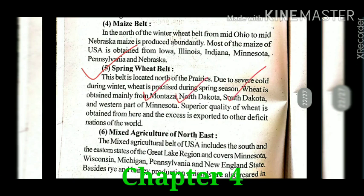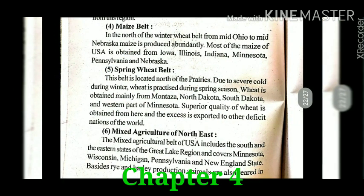The next belt is the mixed agriculture of the northeast. This belt includes the south and eastern states of the Great Lake region and it covers mainly Minnesota, Wisconsin, Michigan, Pennsylvania, and the New England states. Rye and barley production occurs here, and there is also animal rearing with a history of dairy farming. It is called mixed agriculture because both crop production and animal rearing are practiced here.